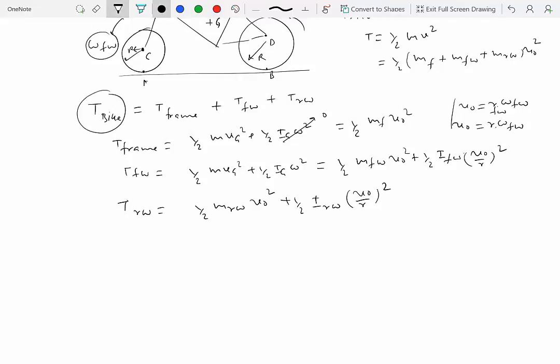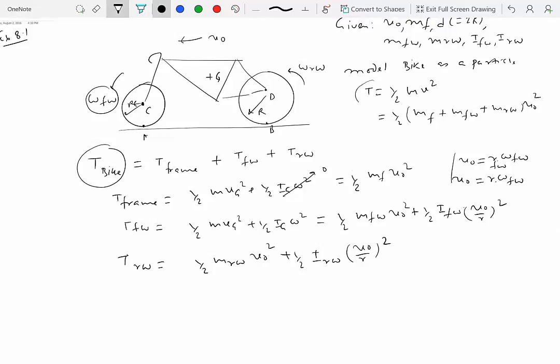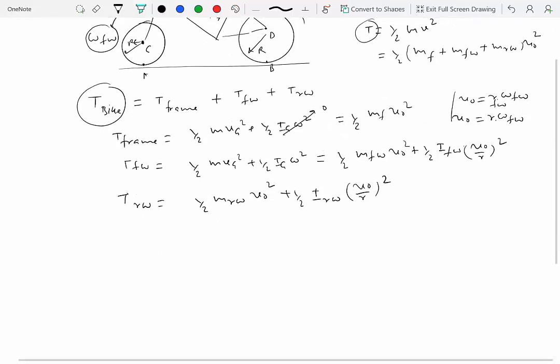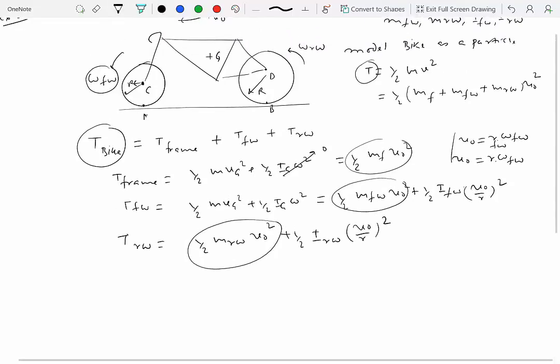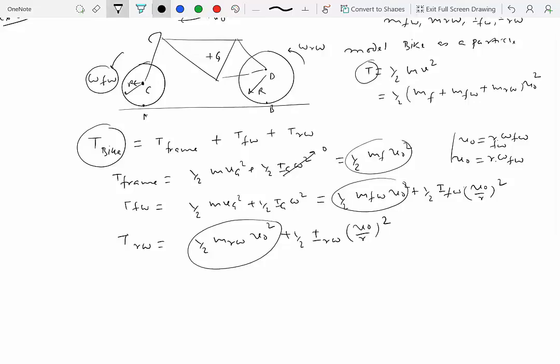Now the question is, will this be more or less compared to the kinetic energy if we had modeled the bike as a particle? The answer to that question is fairly simple. As you can see from these three expressions, this term, this term, and this term over here, these three terms correspond to the kinetic energy due to translation alone. Which means that when you add these three terms which are circled together, you will get this.